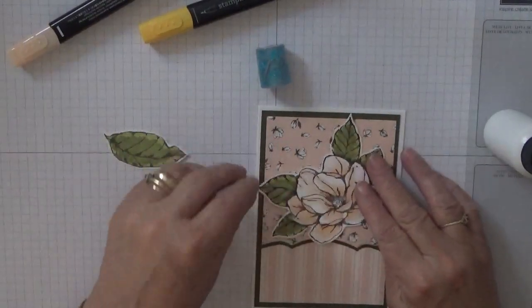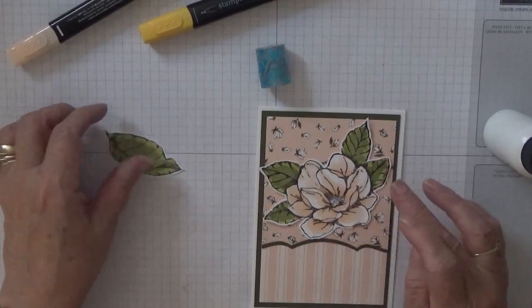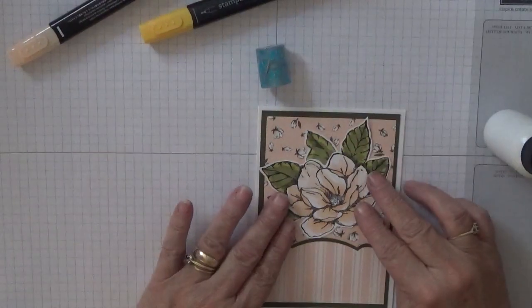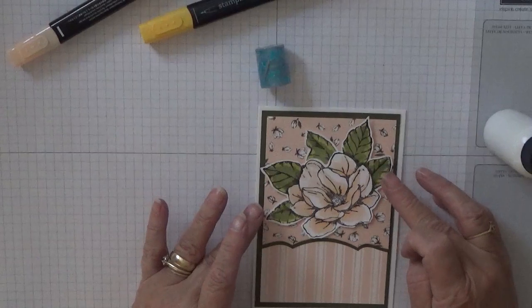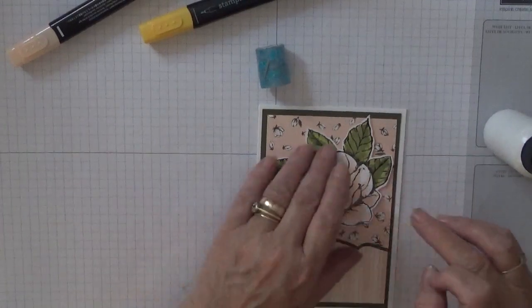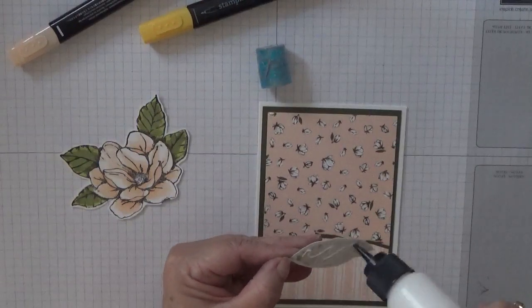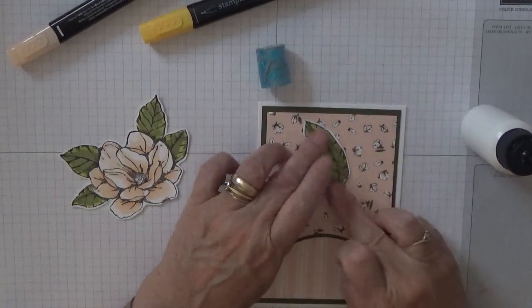Now this flower, I'm going to stick like that. Oh, I don't know whether to... Oh, yeah. I quite like that. But it needs to go on dimensionals. But this doesn't. So, I'm just going to stick that down like that.